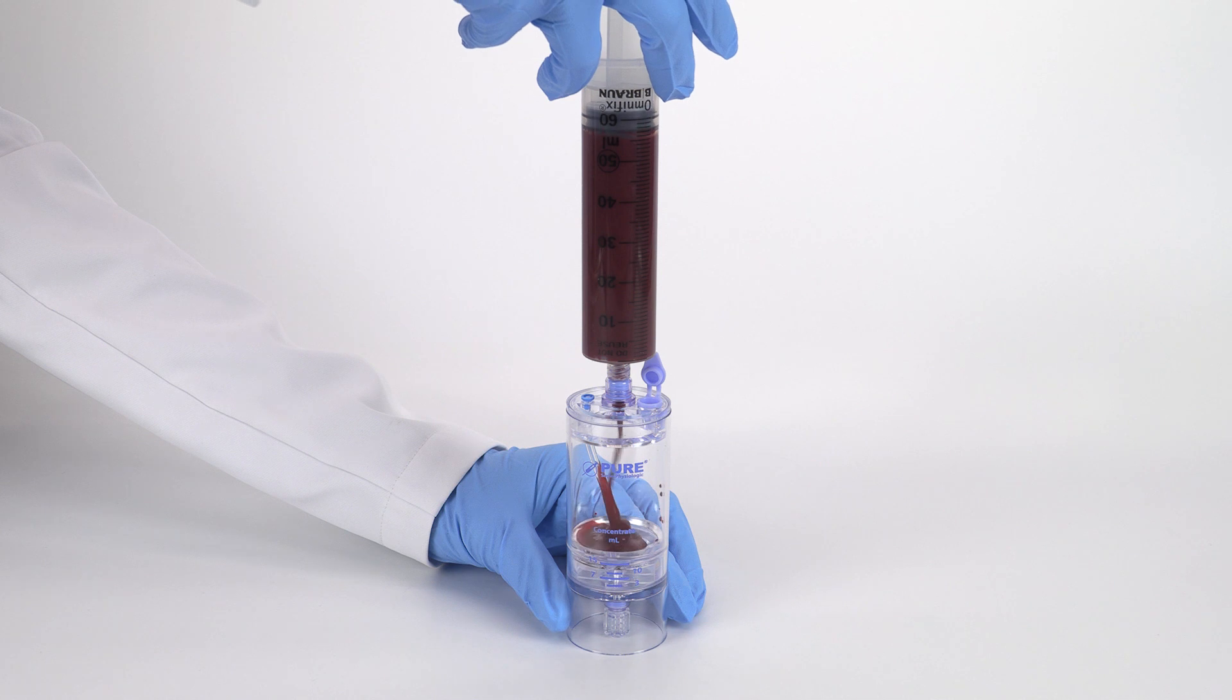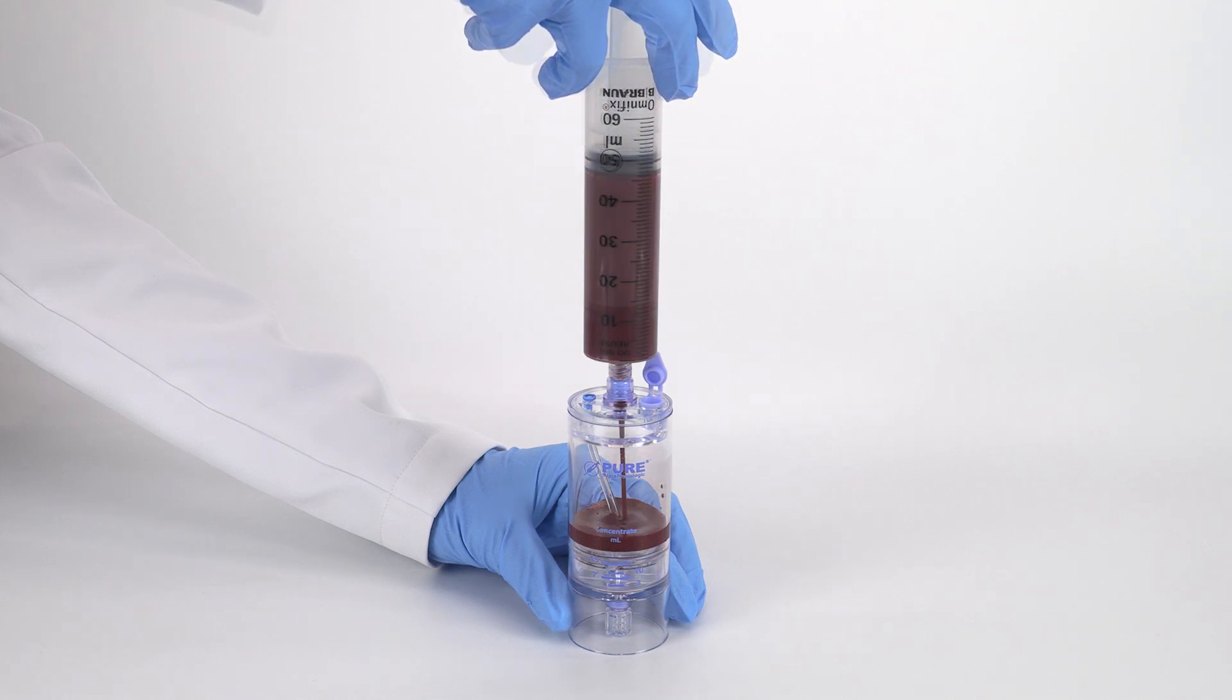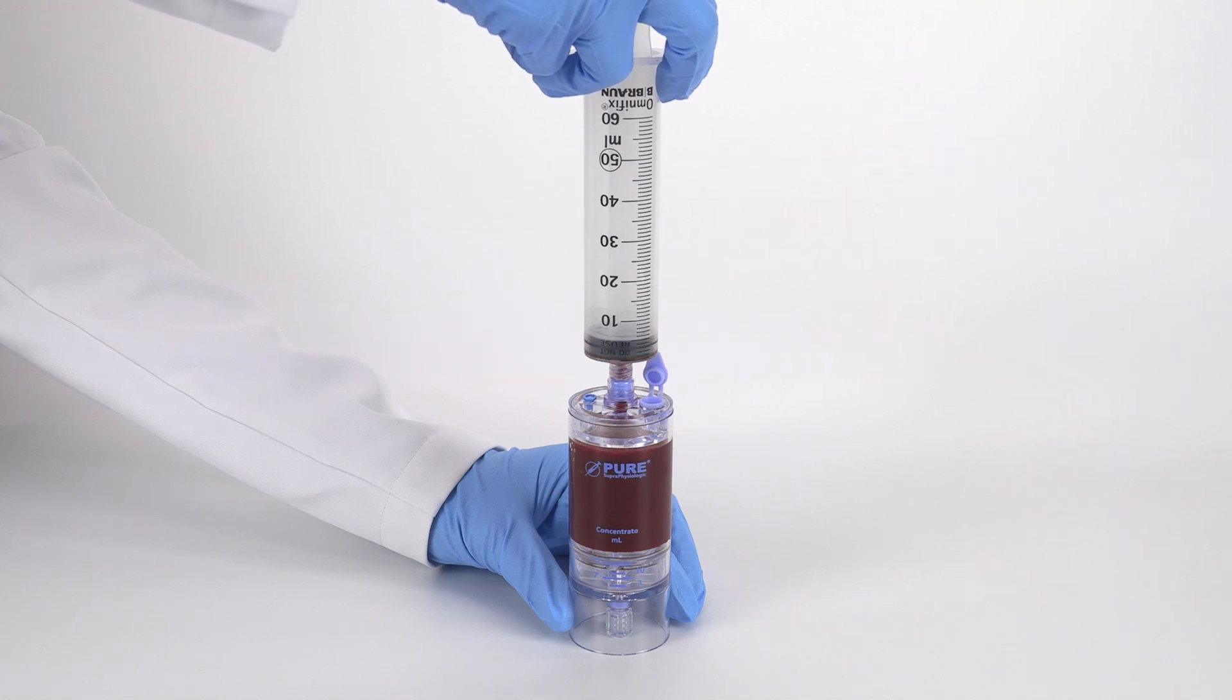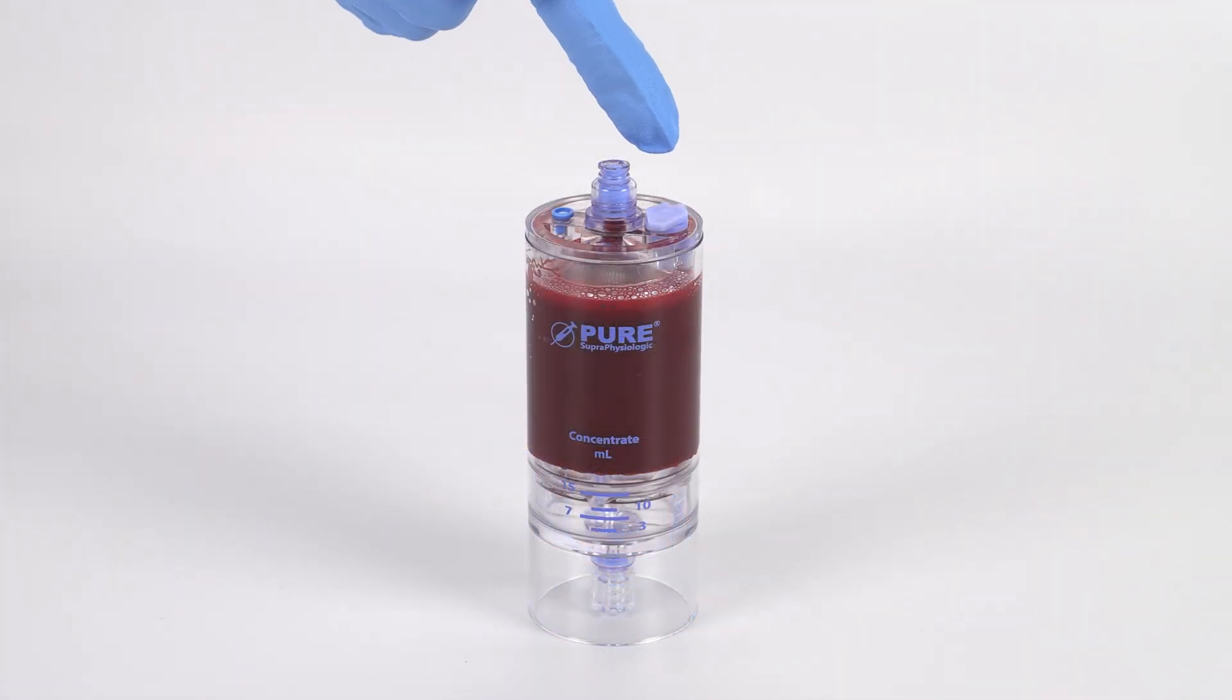Attach the 60 milliliter blood syringe to the top port of the device. Slowly inject the anticoagulated blood into the device. When completed, close the vent.